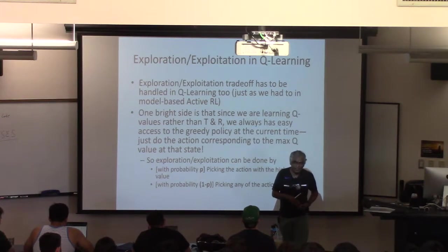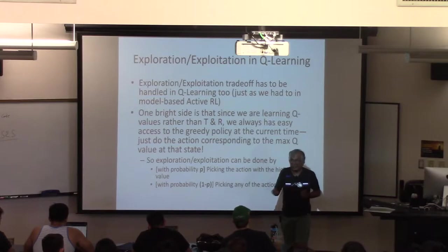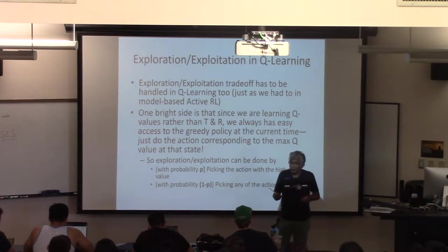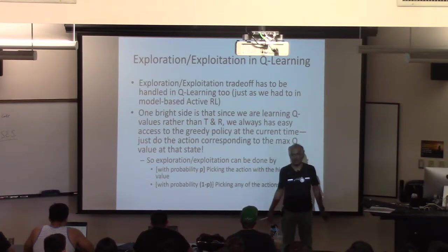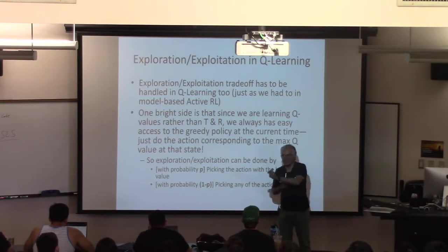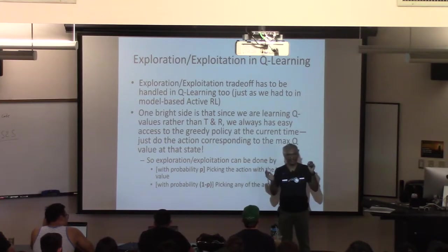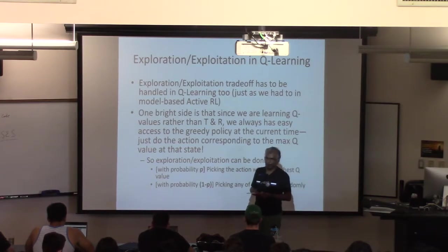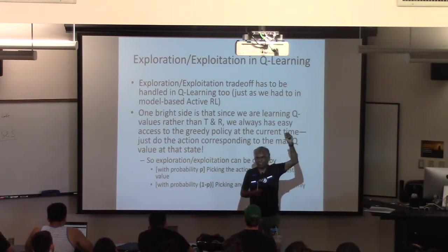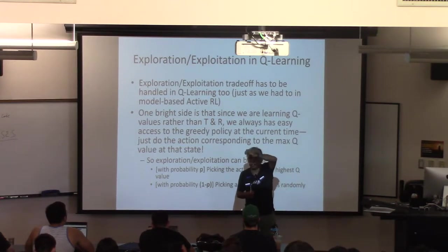You can either follow the greedy policy or with epsilon probability do something random. In the case of ADP, computing the greedy policy involved converting the value into policy using T. In Q-learning, as long as you have Q's, you know your greedy policy right now. Whatever state you are in, the action with the highest Q is the best action. So exploration becomes even simpler. With probability one minus epsilon, you pick the action with the highest Q value in this state.